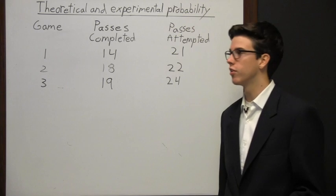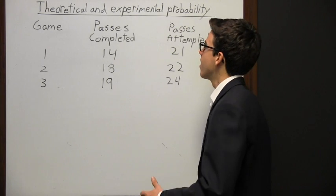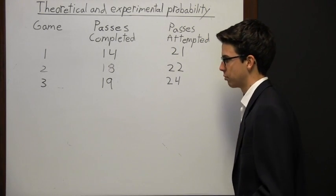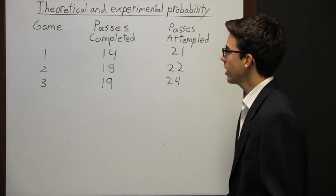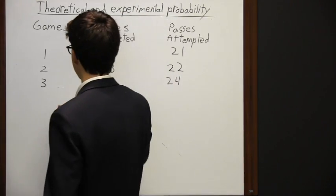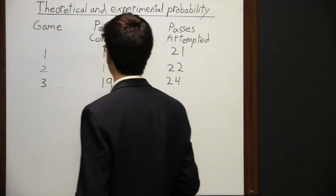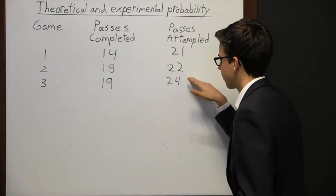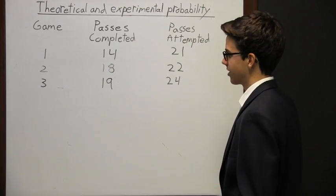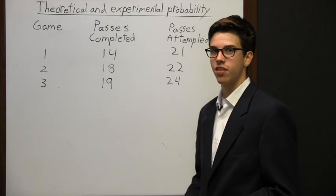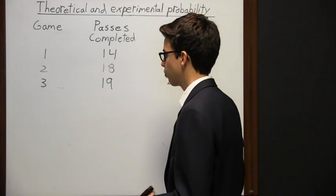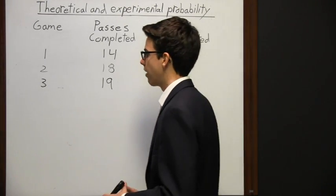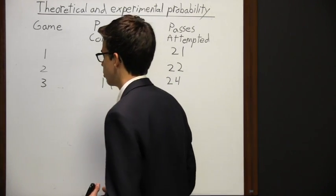When dealing with probability, we have theoretical probability and experimental probability. Here we have the data from three games of football, where the quarterback completed this many passes out of this many passes attempted. It's also said that there's a probability of this quarterback completing 60 passes out of every 100 attempts.